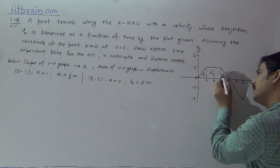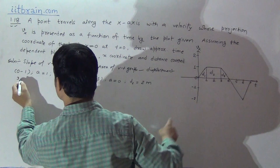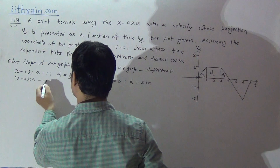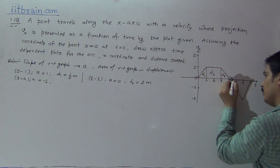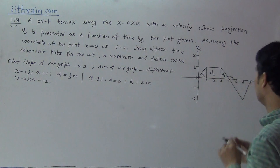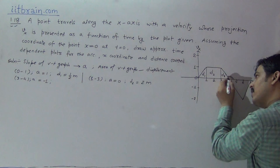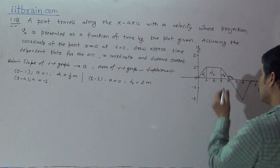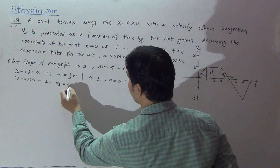In the third part, for the interval 3 to 4 seconds, acceleration equals minus 1 because the slope is 135 degrees — slope must always be measured from the positive x-axis. The angle inside is 45 degrees, outside it is 135 degrees, and tan(135°) equals minus 1, so slope is minus 1. Displacement D3 is again half a meter.